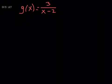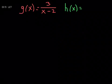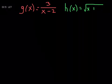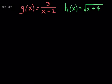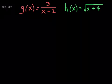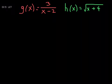And then another function is going to be h of x, and that'll be equal to the square root of x plus 4. What kind of function is h? You could either say it's a radical function, or you can be more specific and say it's a square root function. These two functions, g and h, are given to you.